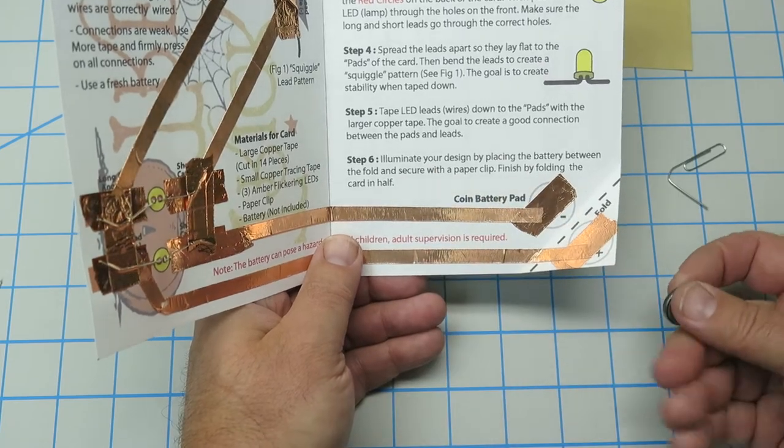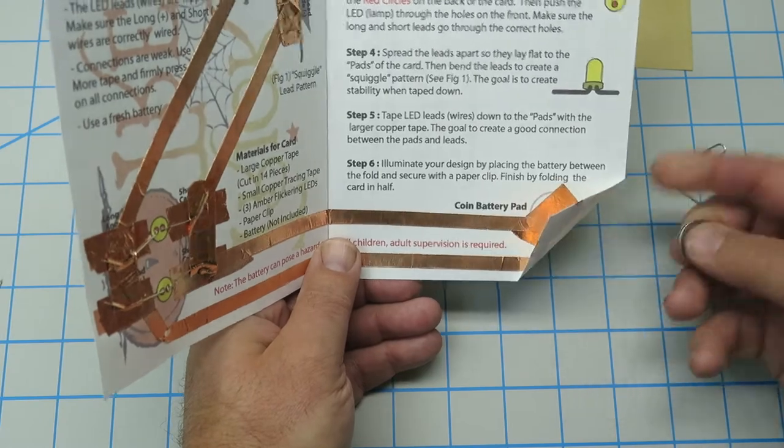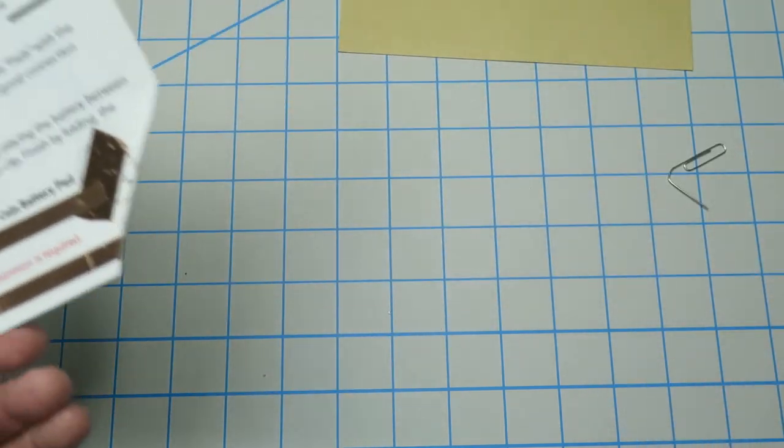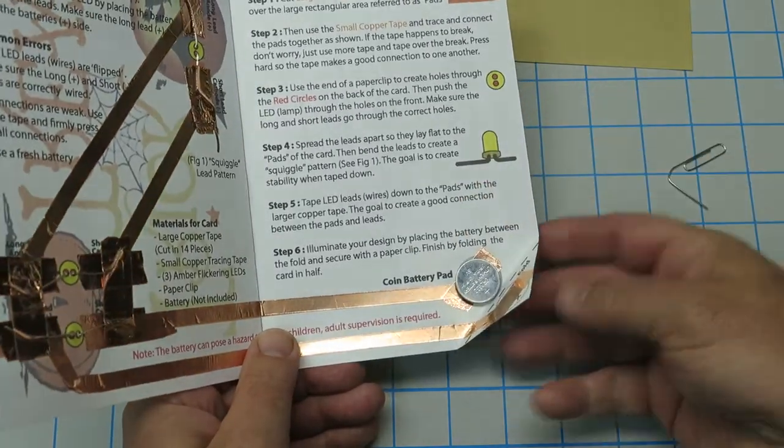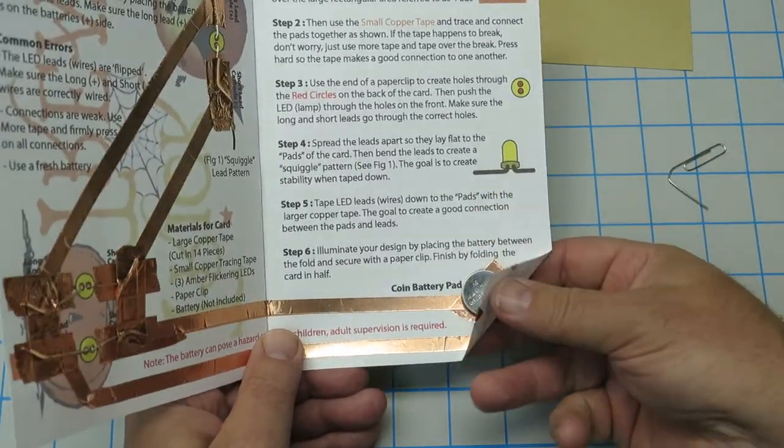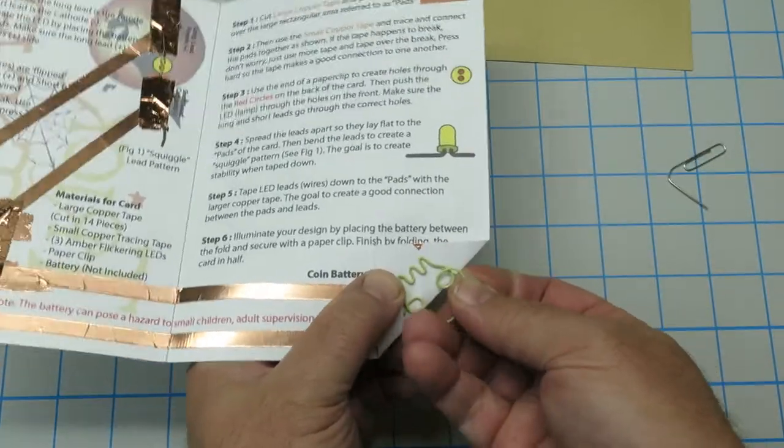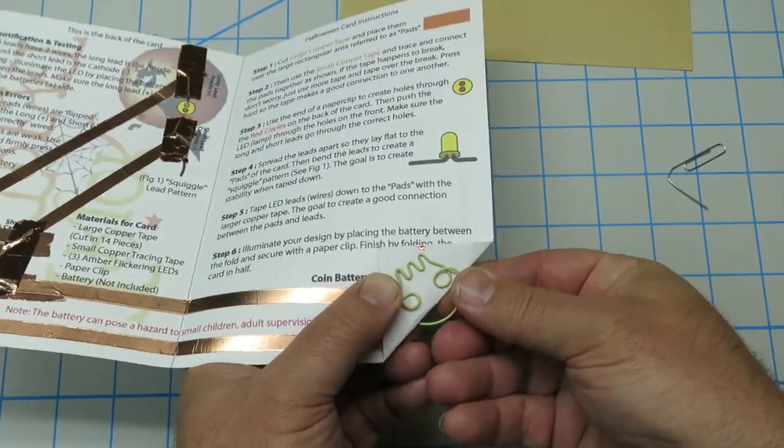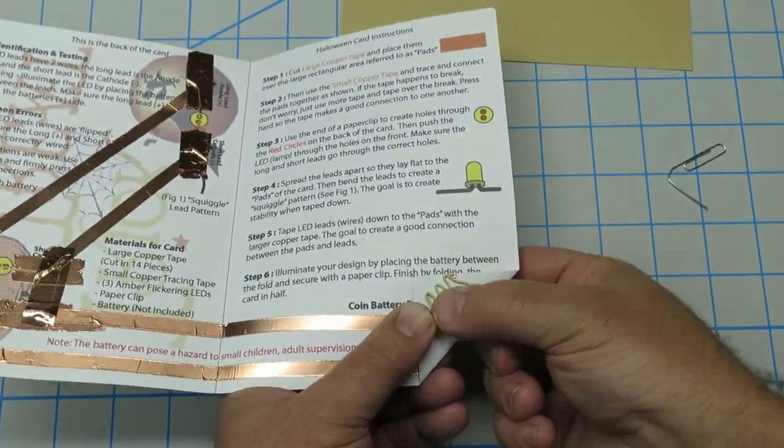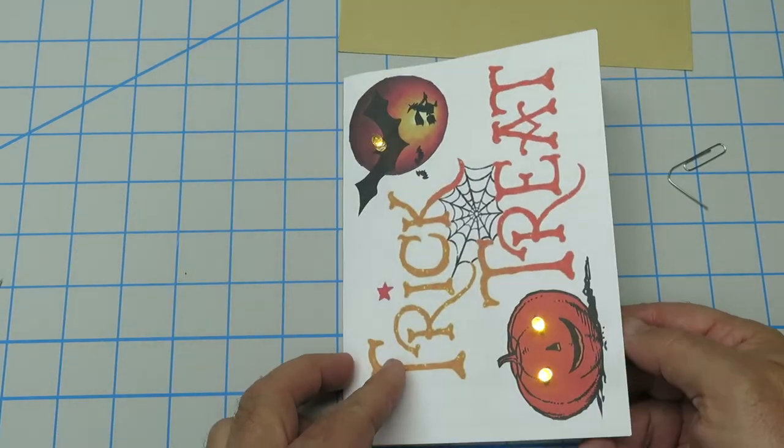Tape the wires down to the pads. We did. Goals to create a good connection between the pads and the leads. We did. Illuminate your design by placing the battery between the fold and secure with the paper clip. So you're going to fold that over. Paper clip. Where's the Halloween guy? Batteries like that. Positive on this side. There's the positive. I'm going to fold it over. You can put it on that side. On that side. I think that side's kind of cool. Moment of truth. Nice.